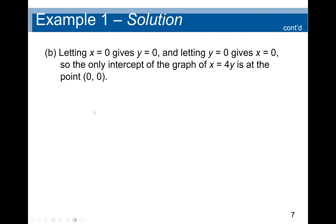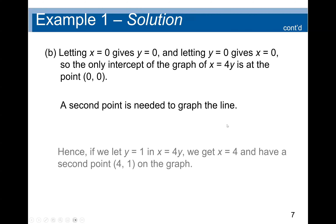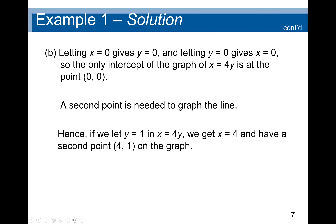Because when x is zero, y is zero, and when y is zero, x is zero, we have only one intercept. A second point is needed to graph the line. So in this case, we set any other value — here we use y equal to one. If y equals one, then x = 4y, which means x equals four times one, giving a second point of (4, 1).